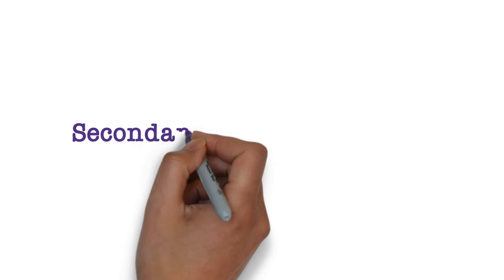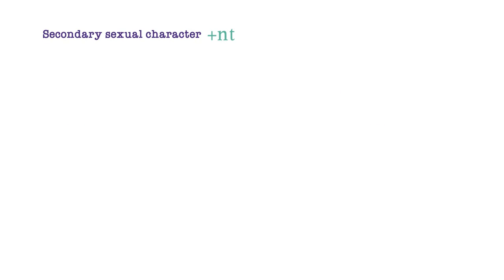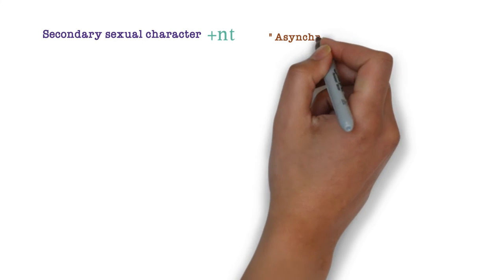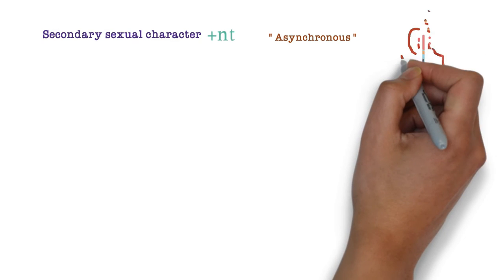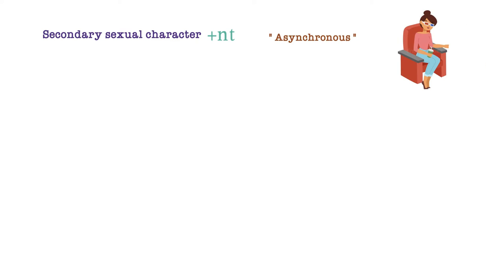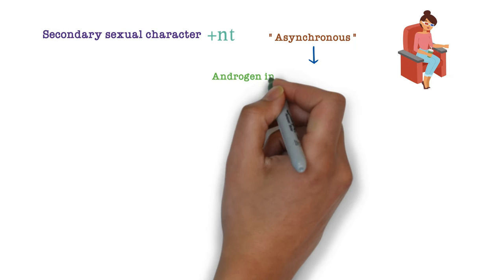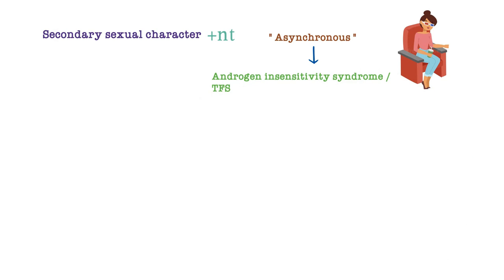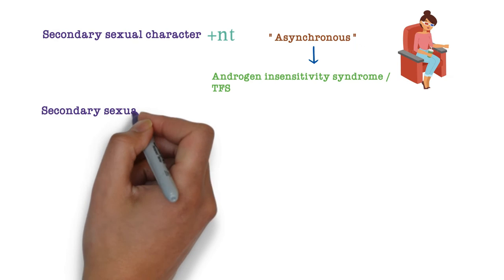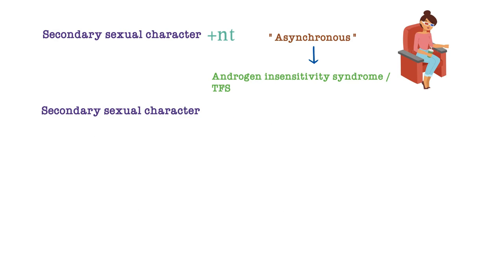If secondary sexual characters are present but asynchronous — that is, characteristics of the other sex — there may be androgen insensitivity syndrome, also called testicular feminizing syndrome.